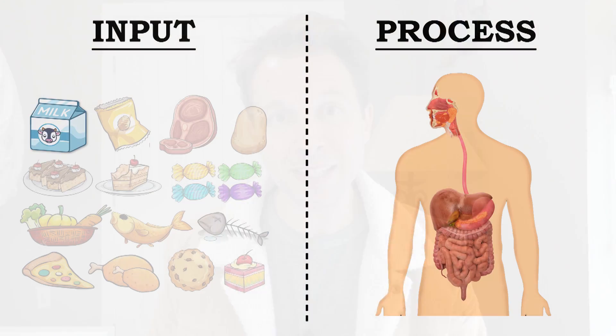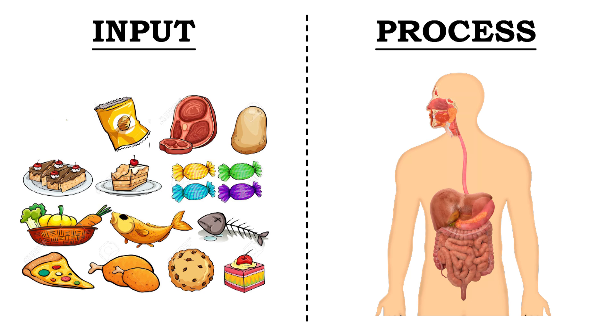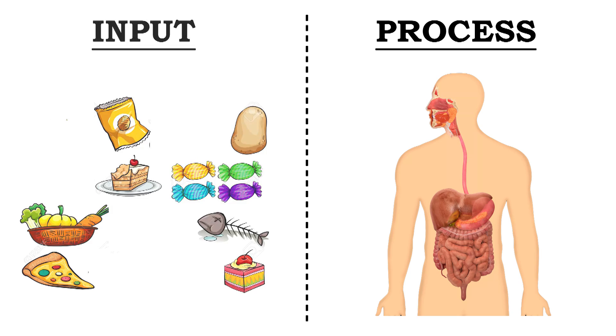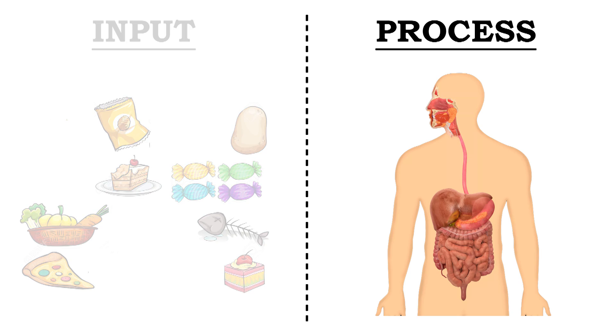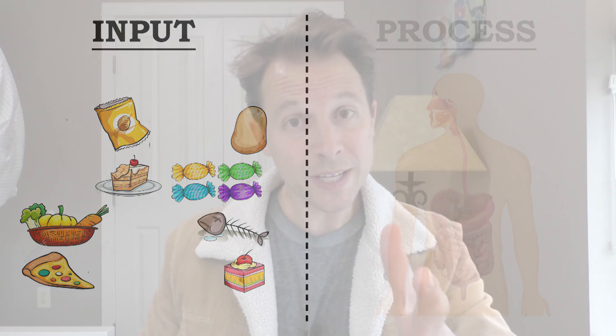Where human beings differ is input — what foods can we put through that system? For example, people who are lactose intolerant cannot ingest milk. That doesn't change the process or give them a whole new digestion system; it just means what triggers that system to do its process is different for different people. Some people can't do gluten, some people can't do certain proteins — it doesn't change the process, it simply changes the input.